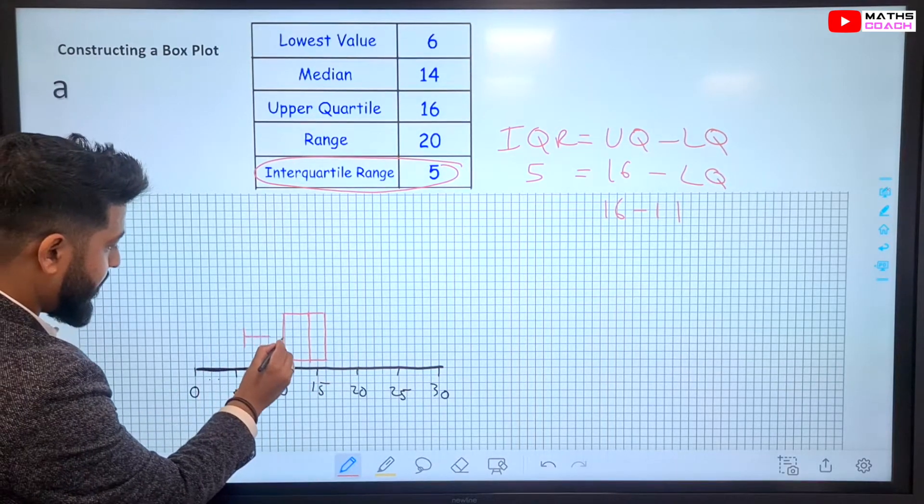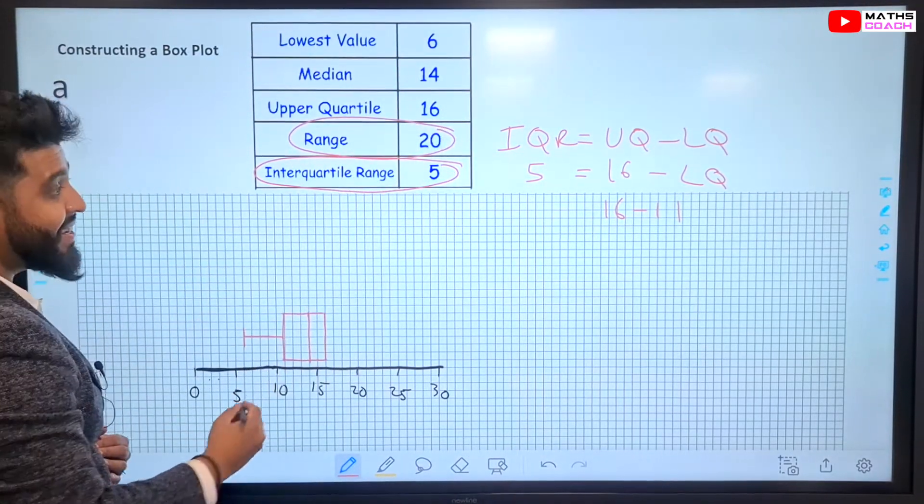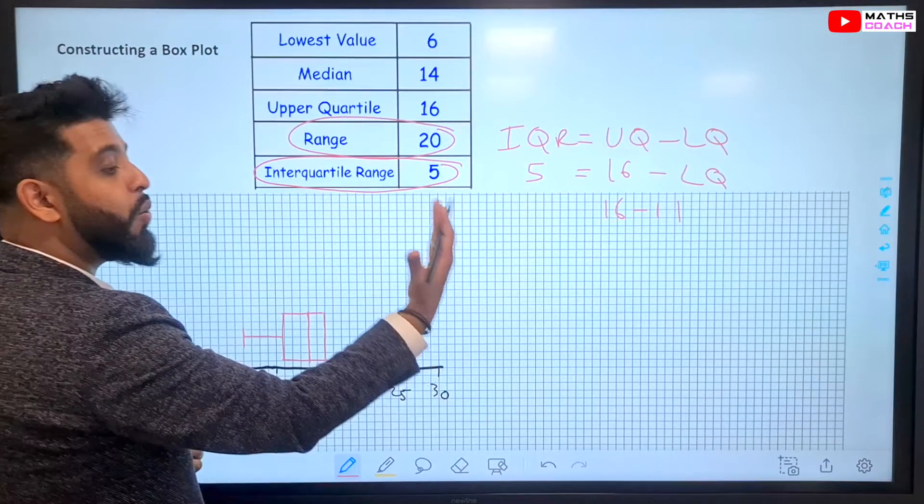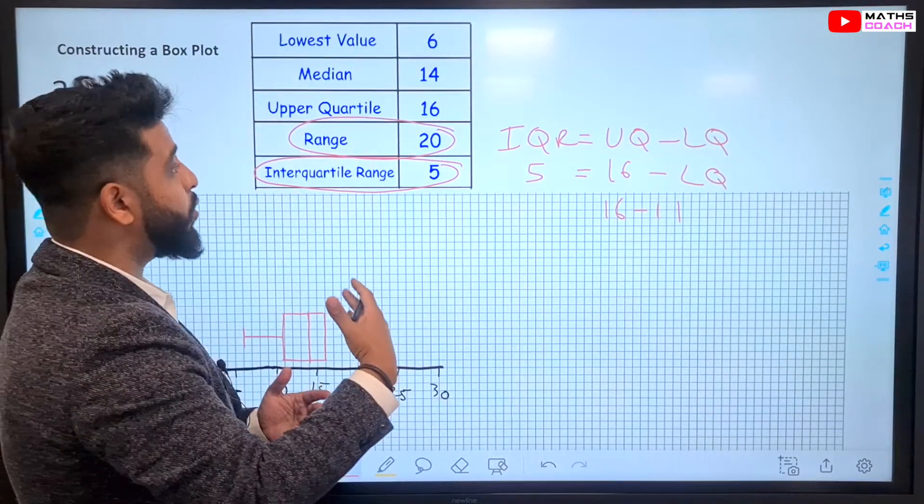Now, the range, we are told, is 20. Which means that the largest value, take away the smallest value, which is 6, has to equal to 20. So, what will that be?